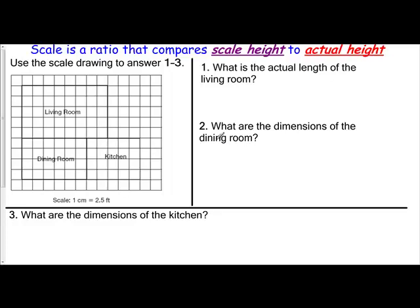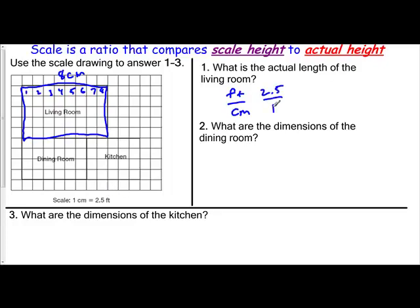So let's take a look at this. What is the actual length of the living room? So this is our length right here. Let me just draw it out to make sure it's clear what we're talking about. This here is the living room, and we want to know the length. We have one, two, three, four, five, six, seven, eight centimeters as the length of the living room. We have a scale of one centimeter equals two and a half feet, so let's try this out. We're comparing feet to centimeters, and our unit rate is 2.5 to one. We're saying eight centimeters — since it's centimeters and since it's on the scale instead of the actual, it goes there.